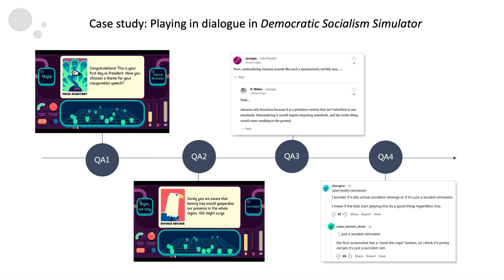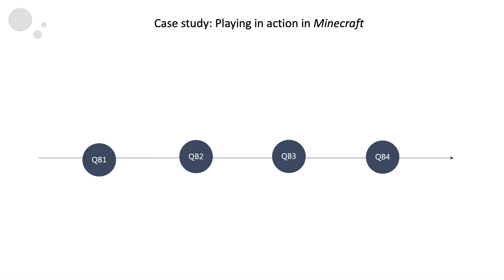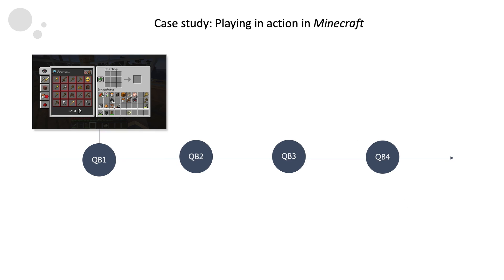In the second example, we will look at the action potential in a mainstream game, Minecraft. As a classic sandbox video game, Minecraft encourages the players to participate in a range of harmless activities such as crafting tools and building shelters. Since the game doesn't set any specific goal for the player to accomplish, it leaves a lot of room for innovative actions to take place.